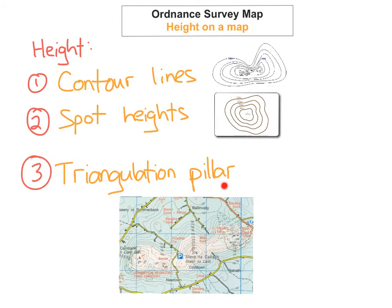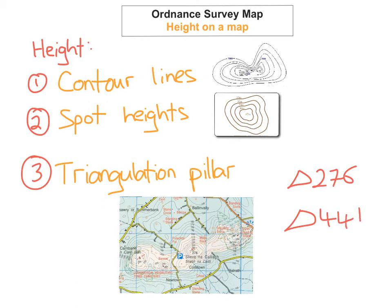The next one is triangulation pillars, or triangulation stations. These are the little triangles that you can see on the map. Each triangle has a number next to it — for example, 276 or 441 — which represents the height above sea level. This triangle here says 276, so it's 276 meters above sea level.